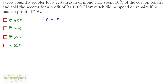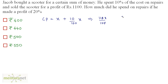He spent 10% of the cost on repairs, so this extra amount spent on repairs will be added to the cost price of the scooter. So the cost price equals X plus 10% of X, which is X plus 10/100 times X. This is equivalent to 110X/100, so the cost price equals 11X/10.